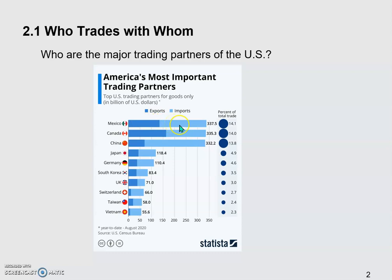For these three trading partners, if we add exports and imports, the trade volumes are very close. Total trade between the US and Mexico was $337 billion, with Canada $335 billion, and with China $332 billion. Each accounts for approximately 14% of US total trade, so the top three together account for more than 40%.